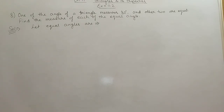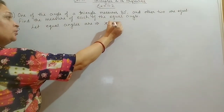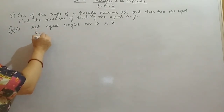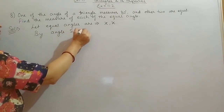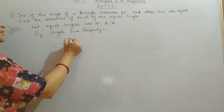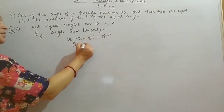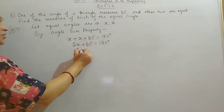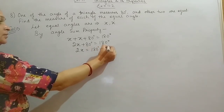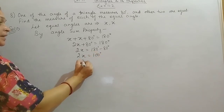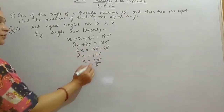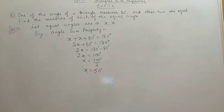Next is question 8. One angle of a triangle measures 80 degrees and the other two angles are equal. Find the measure of each equal angle. In a triangle, there are three angles. One is 80 degrees and the other two are equal, so let them be X and X. By angle sum property, X plus X plus 80 equals 180 degrees. So 2X equals 100 degrees, and X equals 50 degrees. The equal angles are each 50 degrees.